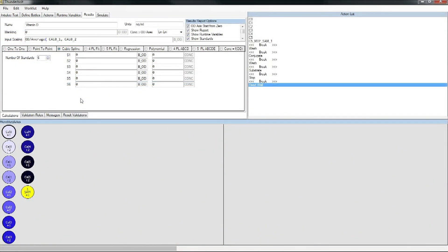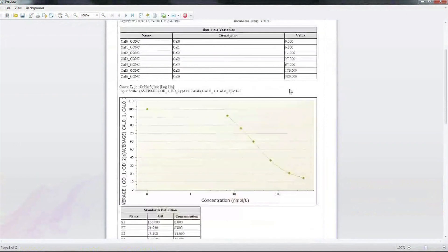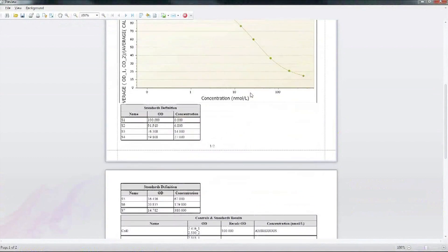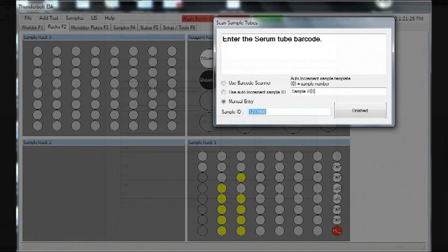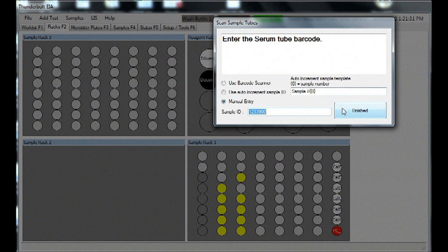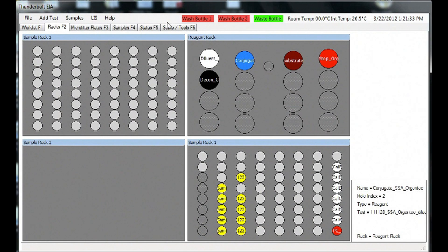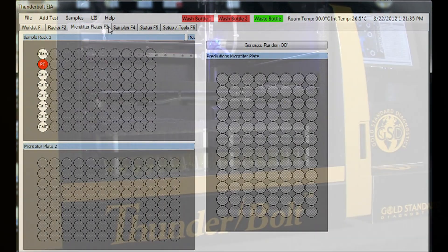The powerful report designer can be customized to fit your lab's reporting needs, and the Thunderbolt software features bi-directional integration with most lab information systems. The user interface is highly intuitive and all features are fully supported directly by Gold Standard Diagnostics experts.